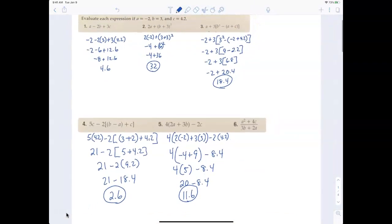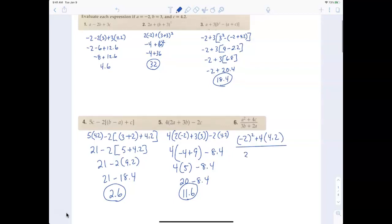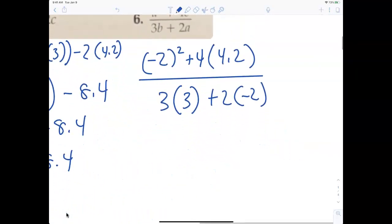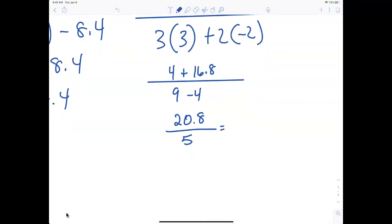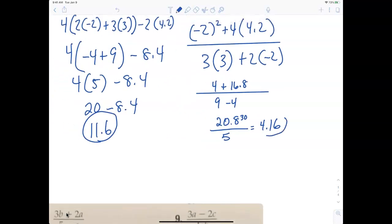Number 6, got to be careful with the fractions. Negative 2 squared plus 4 times 4.2 all over 3 times 3 plus 2 times negative 2. That's 4 plus 16.8 over 9 minus 4, 20.8 over 5. I think this is an easy one to divide out. 5 goes into 20 four times, 0.5 goes into 8 once with 3 left over, which creates a 30, so 5 goes into 30 six times. So 4.16 would be good.